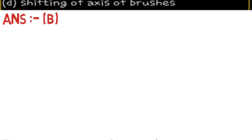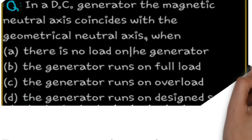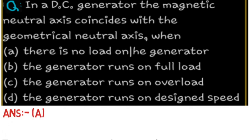MCQ 2: In a DC generator, the magnetic neutral axis coincides with the geometrical neutral axis when: (A) there is no load on the generator, (B) the generator runs on full load, (C) the generator runs on overload, or (D) the generator runs at design speed. The answer is A — when there is no load on the generator, the GNA and MNA coincide with each other.